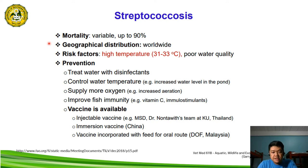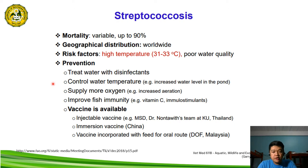Streptococcosis is worldwide in distribution. Risk factors include high temperature, particularly ranging from 31 to 33 degrees centigrade, and poor water quality. For prevention, this includes treating the water with disinfectants, controlling water temperature — for example, increasing the water level in the pond — and supplying more oxygen or increasing aeration, as well as improving fish immunity by administration of vitamin C and immunostimulants. A vaccine is currently available for streptococcosis.